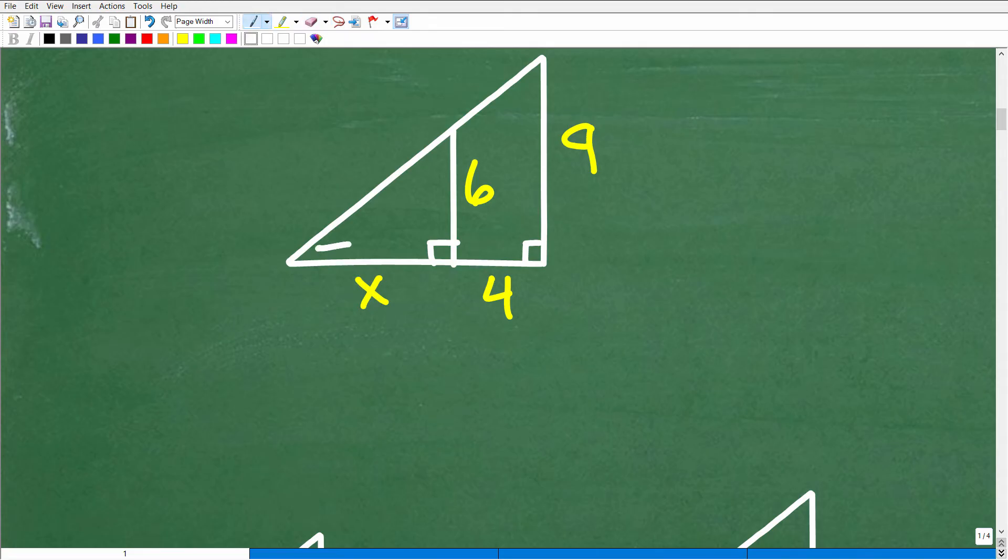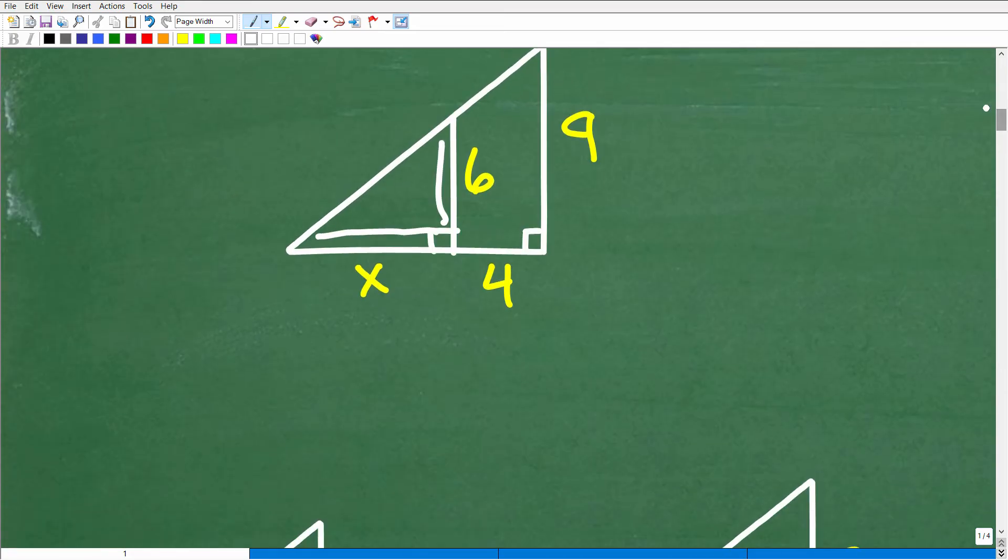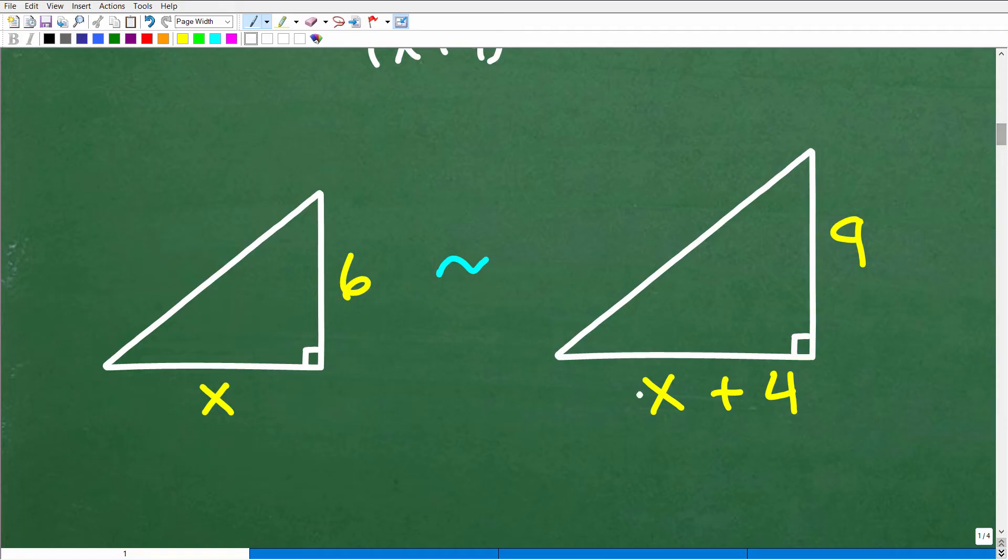And this is the bigger triangle, x plus 4 and 9. Let's go back over here to make sure you kind of see what's going on because this is really important. So the sides of this triangle is x and 6. That's the small triangle. You can see it right there. Again, these are right triangles. Now the bigger triangle, what is the side down here? Well, here this is x and this is 4. So this entire length here is x plus 4. So that's the base and the height is 9. So here is this triangle right here, x plus 4 and 9. So now we're dealing with two similar triangles. And what we can do is construct a proportion to solve for x.